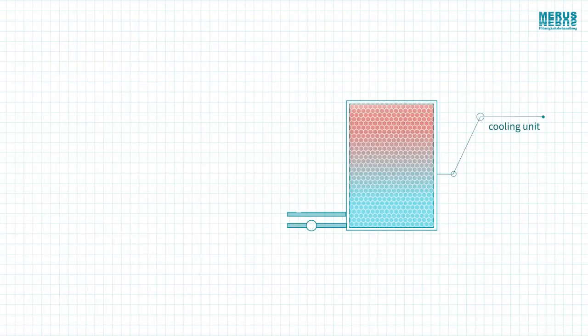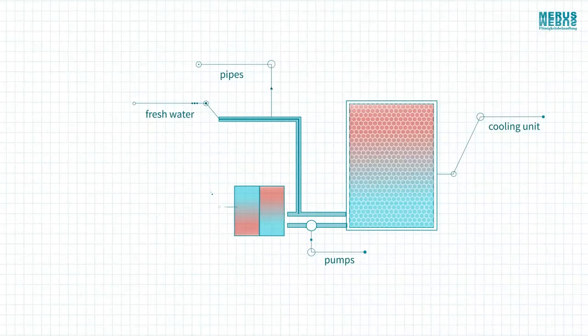A typical cooling circuit consists of a cooling unit, pumps, pipes and heat exchangers.